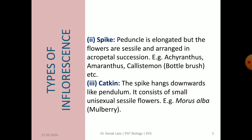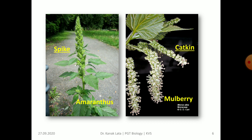The third simple racemose inflorescence is catkin. In this case, the spike hangs downwards like a pendulum and consists of small unisexual sessile flowers. It is commonly seen in Morus alba, that is mulberry. In the given figure, you can observe the differences between spike and catkin — you can see how the floral axis is hanged downward.